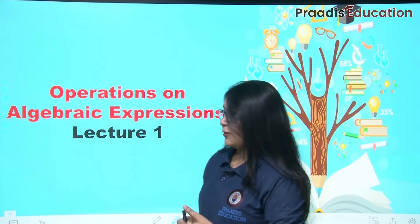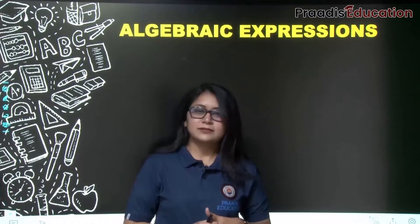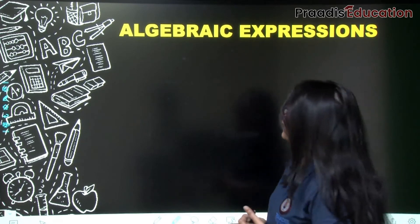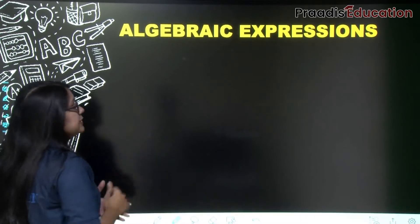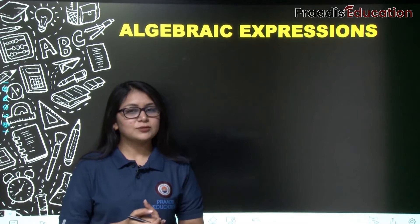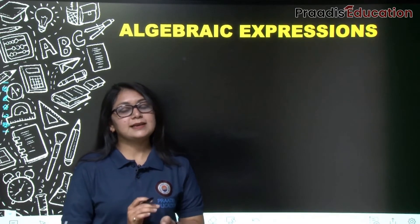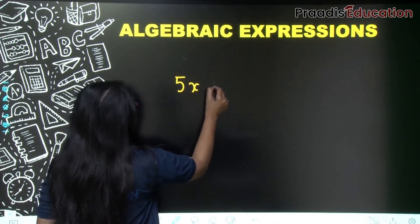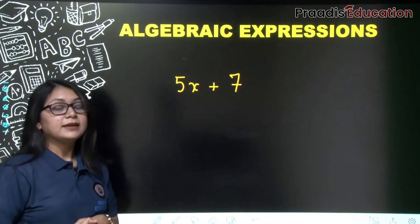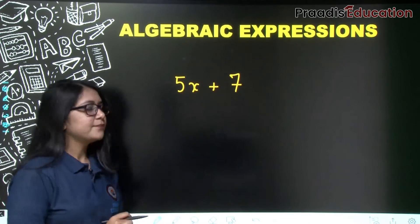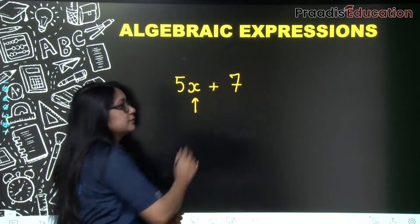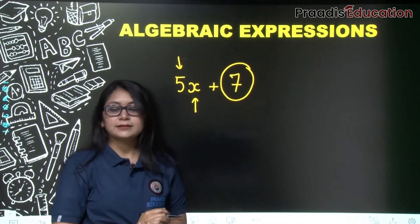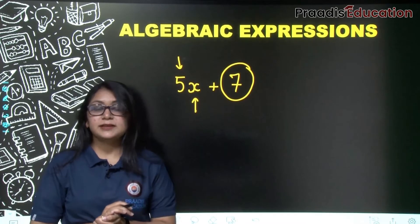I hope you know what is an algebraic expression. If not, let's revise what we mean by algebraic expression. When we take variables, constants, and coefficients, the proper expression we form is called an algebraic expression. For example, if we write 5x plus 7, this is an algebraic expression. These are its components, and 7 is our constant term. So this is an algebraic expression in one variable.